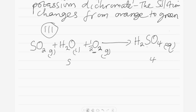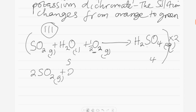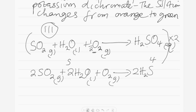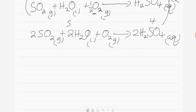However, some of you may not want to write fractional numbers. We can still work with whole numbers — simply multiply through by the denominator of one over two, which is two. So two times one gives us 2SO2 gas, plus 2H2O liquid, plus one over two times two gives us O2 gas, producing 2H2SO4 aqueous.